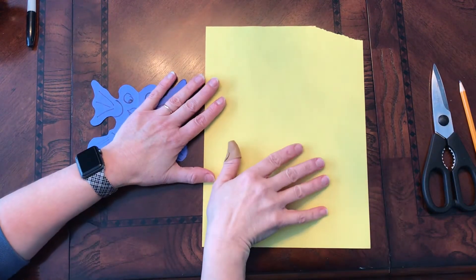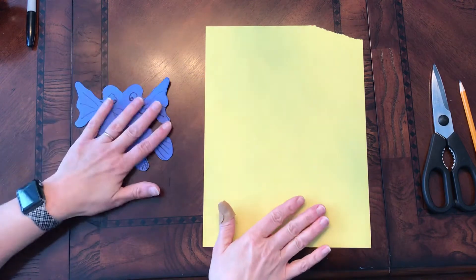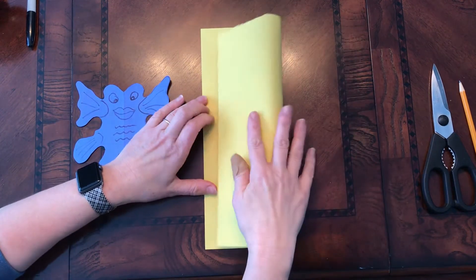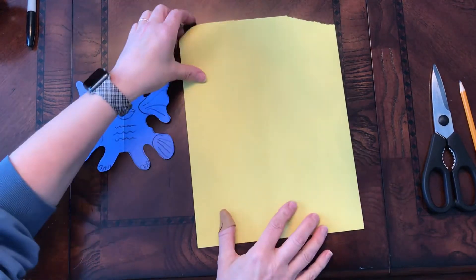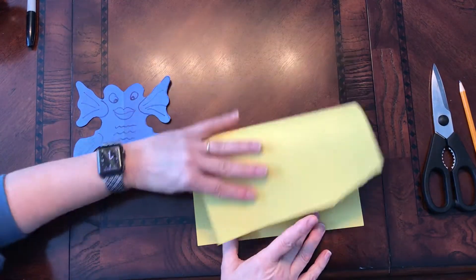So again, the first thing I'm going to do, now you have to decide, is your creature going to be tall? And if your creature is tall, you're going to fold your paper the long way. If your creature might be shorter, you're going to fold your paper this way.